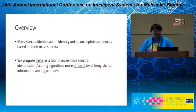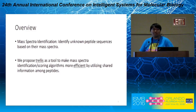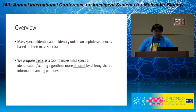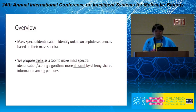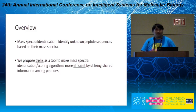Generally, we study the problem of mass spectra identification, where the task is to identify unknown peptide sequences based on their mass spectra, which are generated by the spectrometer machine. In this work specifically, we aim to improve upon existing mass spectra identification scoring algorithms by using the trellis structure, which utilizes the shared information among peptides to make the scoring procedure much more efficient.